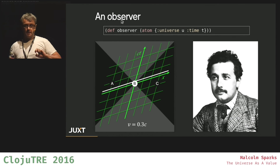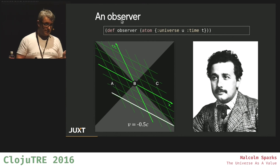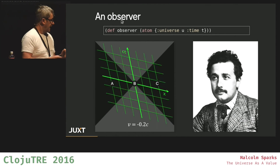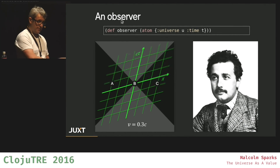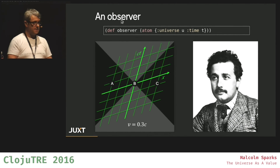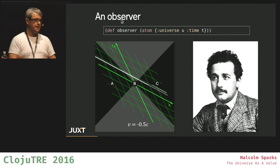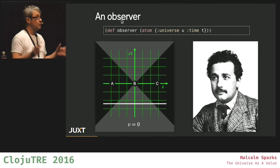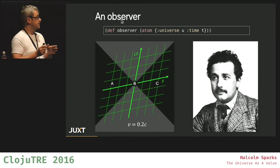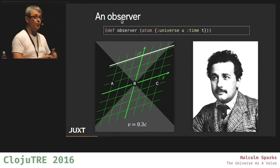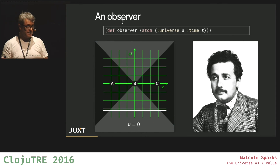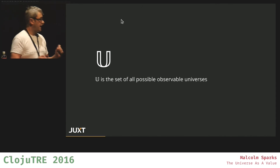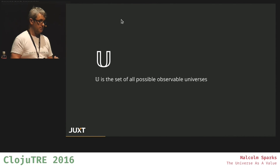Now we've got to think about an observer. I've modelled an observer as a closure atom. And every observer needs to observe a universe. Einstein tells us that time is relative to an observer. In fact, two observers can have two different points of view as to the ordering of events in a universe. So that means we've got multiple universes. We need a set, which I've called U, which is the set of all possible universes.